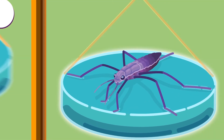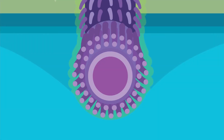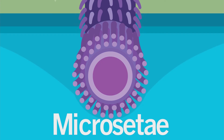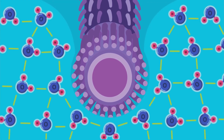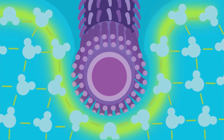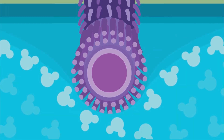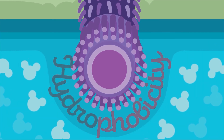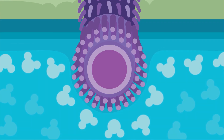Does the strider have a trick up its sleeve? Under the microscope, the strider is covered in thousands of waxy hairs called microcetae. These waxy hairs repel water by preventing hydrogen bond formation between the water molecules and the strider's feet. This water-repelling property is called hydrophobicity. Hydrophobicity further prevents the strider's feet from breaking the water surface.